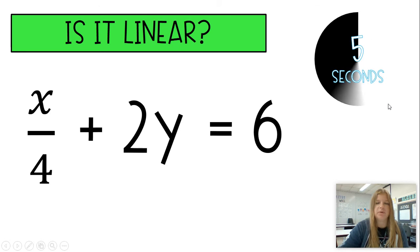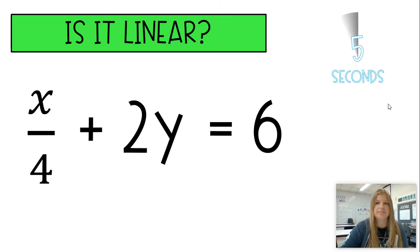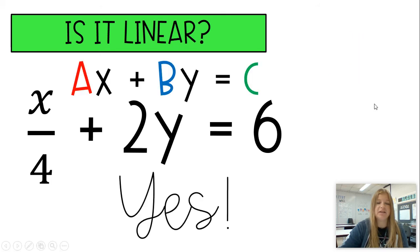X divided by 4 plus 2Y equals 6. Definitely good. This is definitely linear. I can multiply the entire equation by 4. And if I do that, I would end up getting X plus 8Y equals 24, which is definitely a linear equation. So dividing by a number is fine, because I can multiply the entire equation by that denominator.